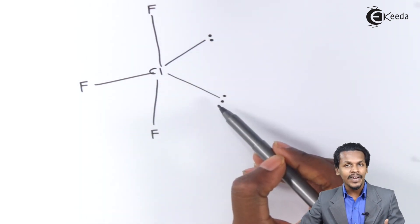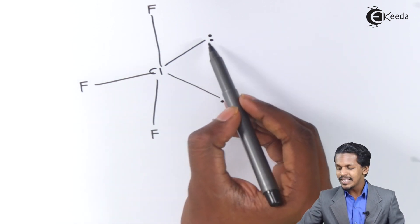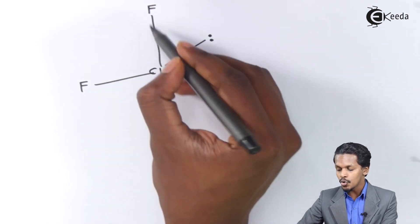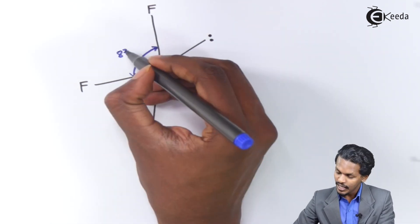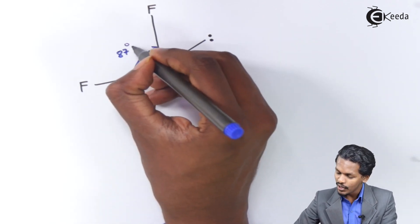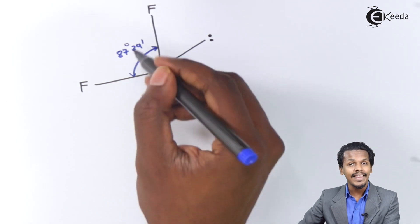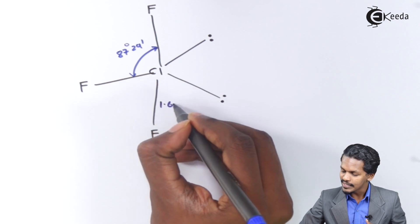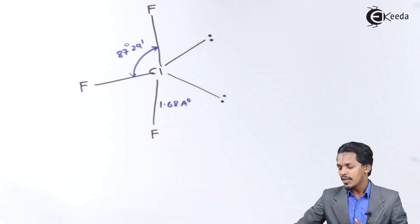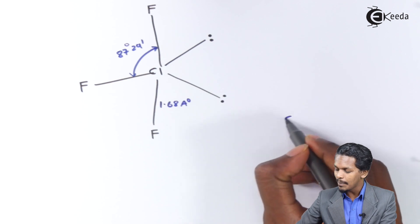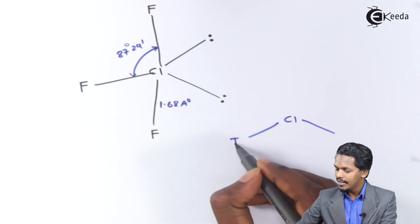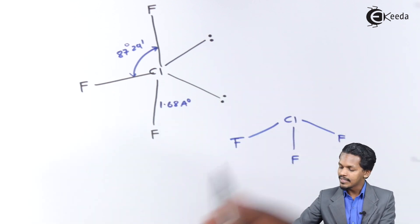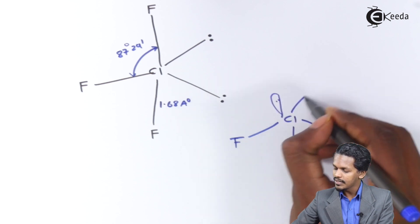The two lone pairs of electrons cause repulsion with the bond pairs, reducing the bond angle from the ideal 90° to 87°29'. The bond length between chlorine and fluorine is found to be 1.68 Å. The resulting structure is a bent or T-shaped structure with two lone pairs on the central atom.